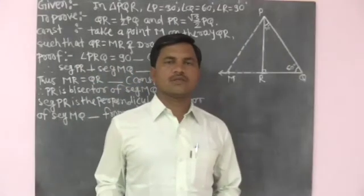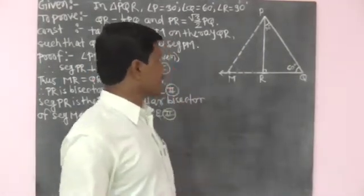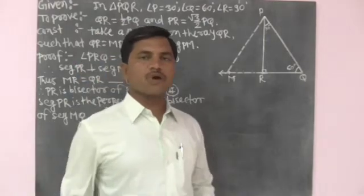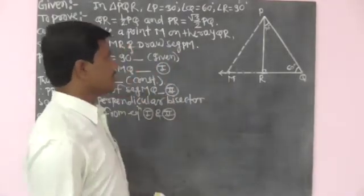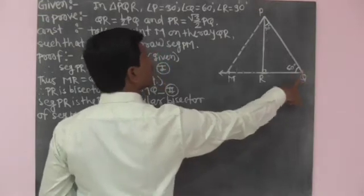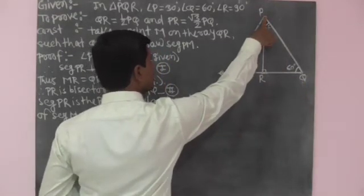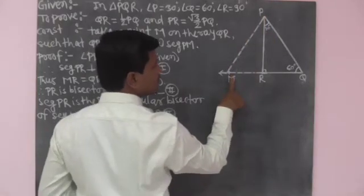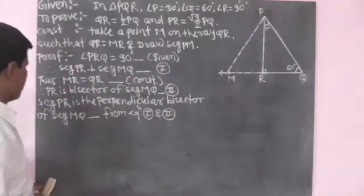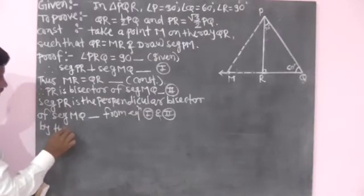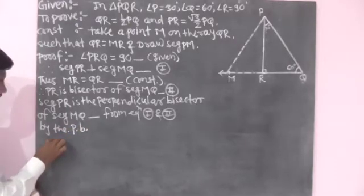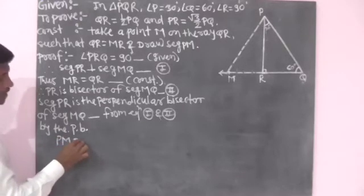We use the theorem of the perpendicular bisector. Since PR is the perpendicular bisector of segment MQ, by the theorem of the perpendicular bisector, point P is equidistant from the endpoints of segment MQ, meaning P is equidistant from point M and point Q. Therefore, by the theorem of the perpendicular bisector, segment PM is equal to segment PQ.